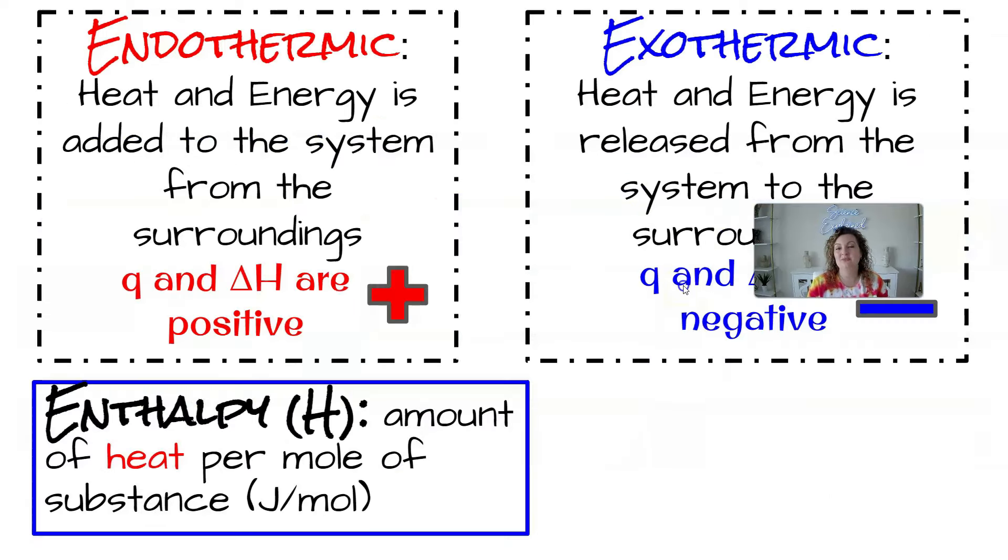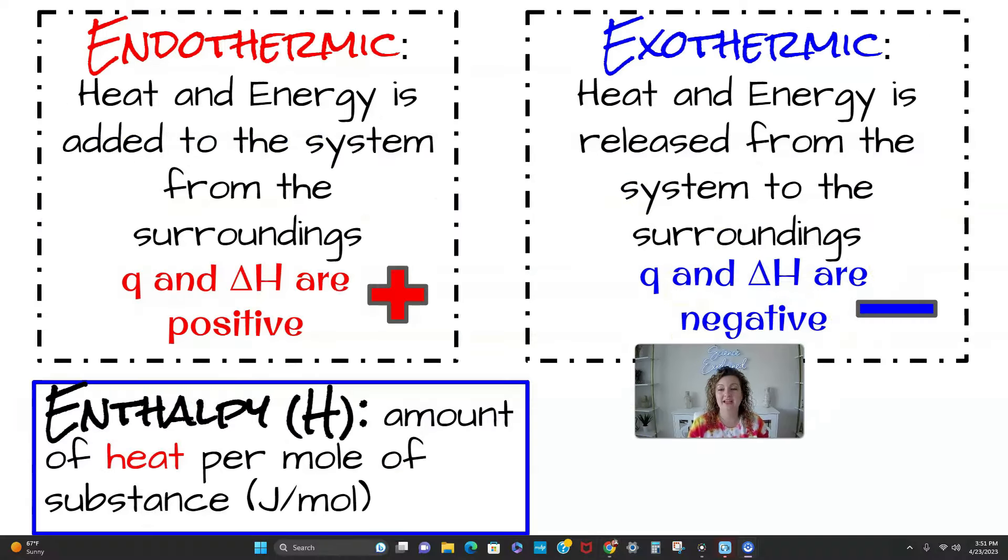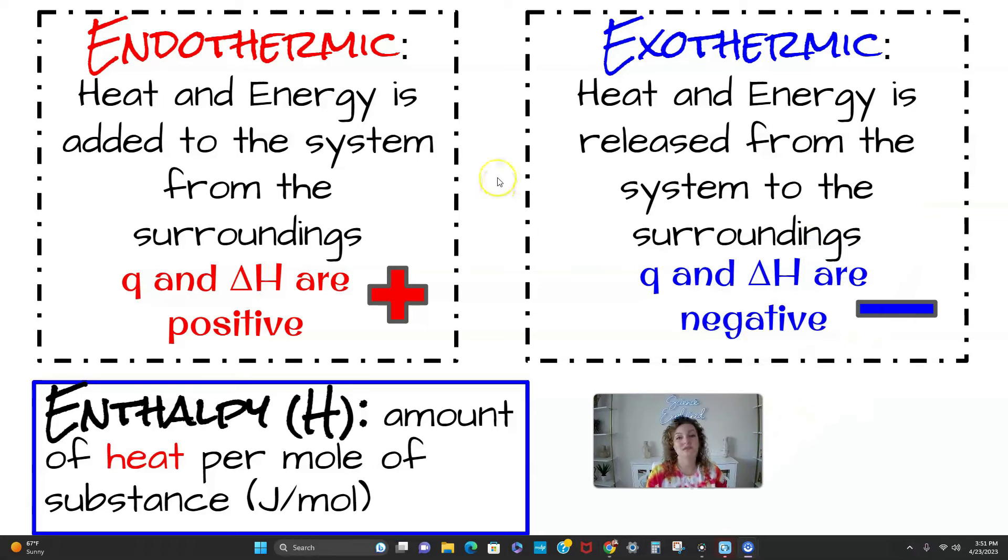Now that we know these terms, let's look at what endothermic and exothermic are. So endothermic is going to be heat and energy added to the system from the surroundings. In other words, our Q, which is heat energy, and our delta H, which is just change in heat or enthalpy, they're going to be positive. So anytime you see that positive number, you know it's going to be endothermic.